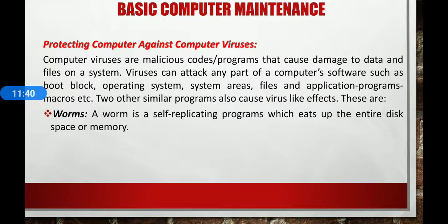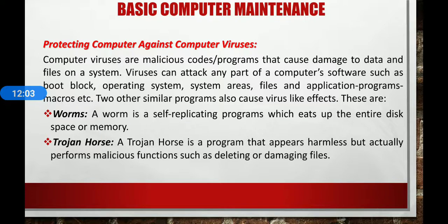Two other similar programs also cause virus-like effects. First, worms: a worm is a self-replicating program which eats up an entire disk space or memory. It keeps creating copies of itself until all the disk space or memory is filled. Next, the trojan horse: a trojan horse is a program that appears harmless, such as a text editor or utility program, but actually performs malicious functions such as deleting or damaging files.